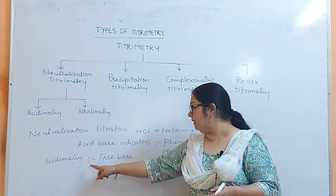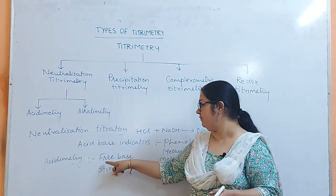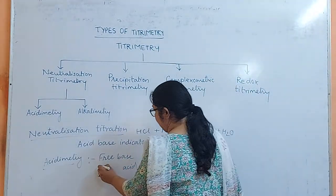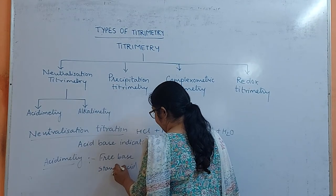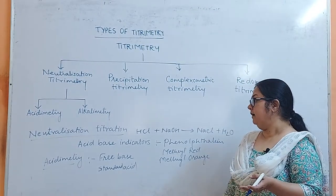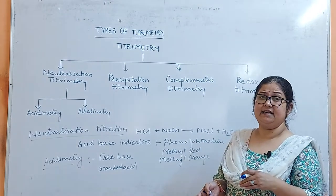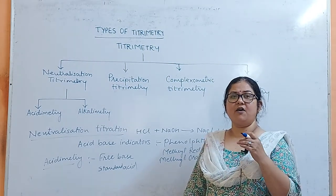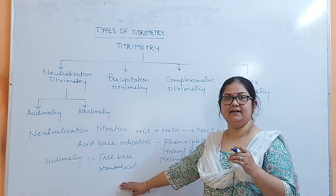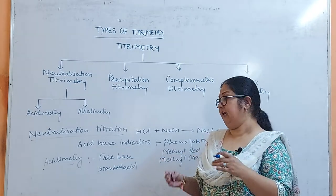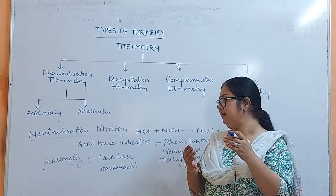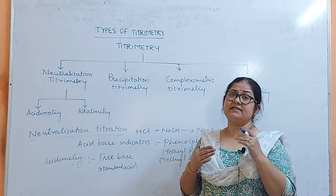So acidimetry is nothing but the titration of free base with a standard acid solution. Alkalimetry is exactly the opposite — it is the titration of free acid, or a salt formed by the hydrolysis of a weak base, with a standard base. So in alkalimetry you are titrating free acid with a standard base, and in acidimetry you are titrating free base with a standard acid.